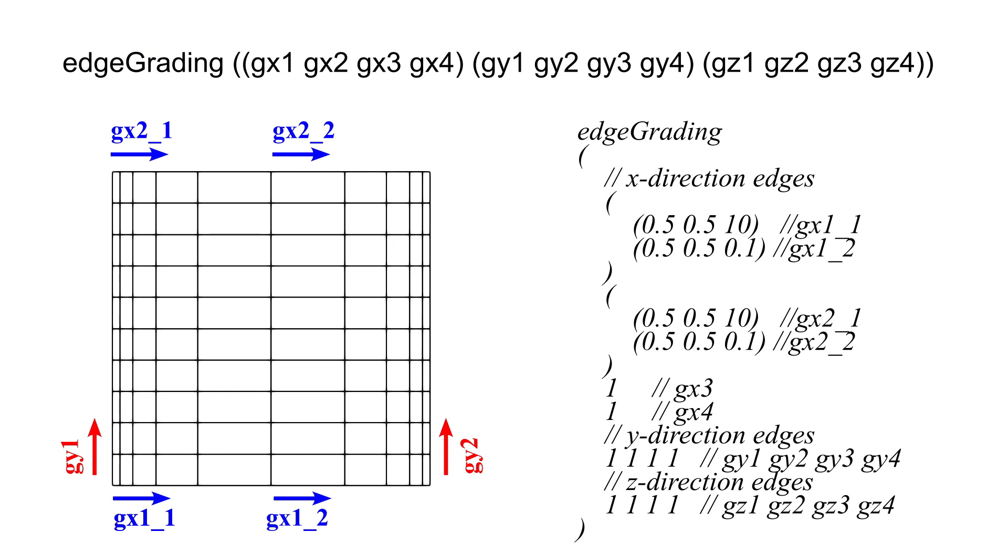We can also use edge grading to split a block edge into multiple parts, each with different bias directions. For example, in this case, I have split the X1 and X2 edges into two parts, each taking 50% of the total edge lengths and 50% of the total cells, but with opposite bias directions. This technique is very useful to concentrate cells near the walls, while keeping a smooth transition in the rest of the domain. A great way to enhance mesh quality around the airfoil surface.